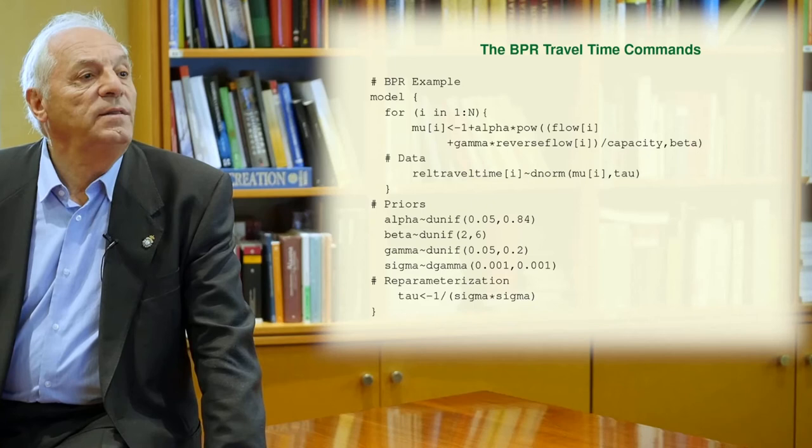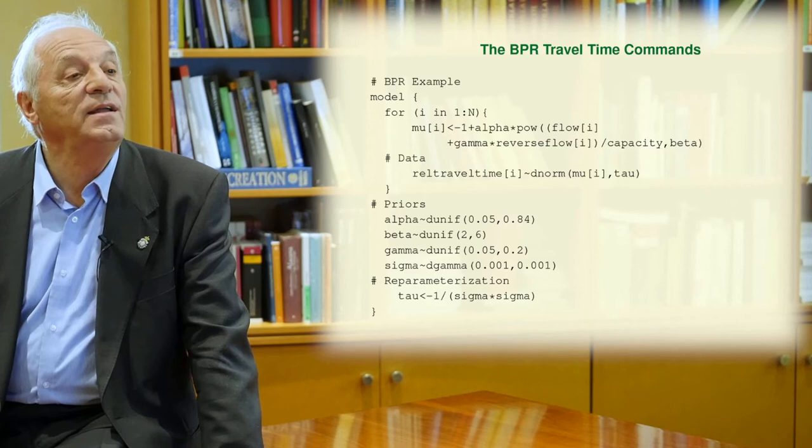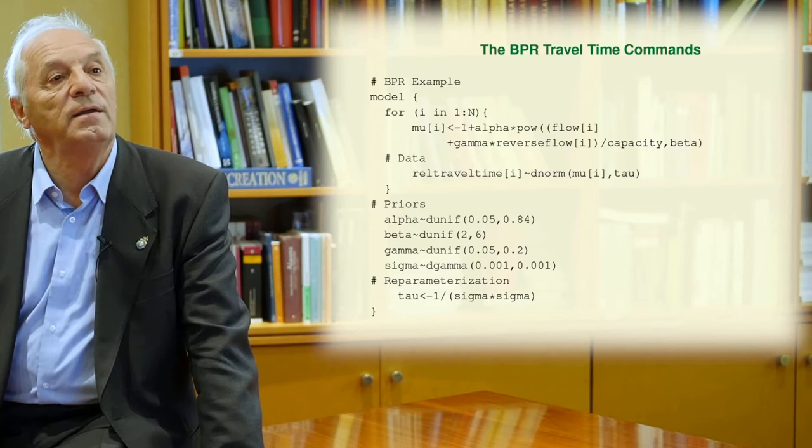Then you have to define the data. The sample is relative travel time of i. And then you need to say that it is a normal random variable with mean mu of i and dispersion tau.